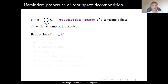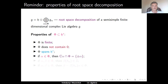In the previous lecture, we established various properties of the set phi. First, phi is finite and does not contain the zero element. The set phi spans the dual space to the Cartan as a vector space. For each alpha in phi, the only scalar multiples of alpha which belong to phi are plus and minus alpha. For each pair alpha and beta in phi, the evaluation of beta at the canonical Cartan element H_alpha is an integer, and beta minus that scalar multiple of alpha is again an element of phi.